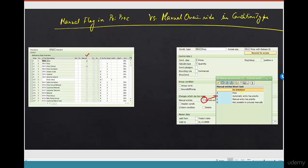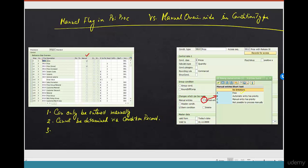The point is: any condition type that you don't want determined via condition records is marked as manual in the pricing procedure. Properties of a manual condition: it can only be entered manually and cannot be determined via a condition record. Examples include header conditions, or conditions determined via external processes like RRB (EK01 costs).